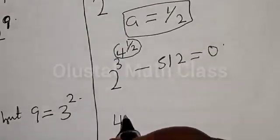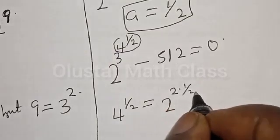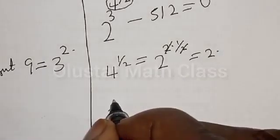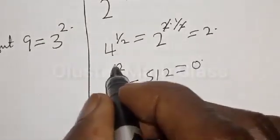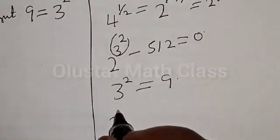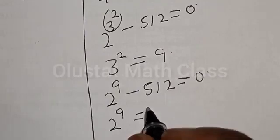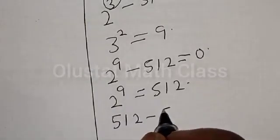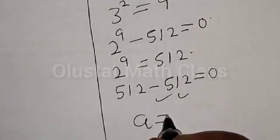Now, 4 raised to power 1/2 is equal to 2 raised to power 2 multiplied by 1/2, which equals 2. Replacing that, we have 2 raised to power 3 raised to power 2, minus 512, must equal 0. Then 3 raised to power 2 is 9. So we have 2 raised to power 9, minus 512, must equal 0. And 2 raised to power 9 is 512, so 512 minus 512 equals 0, which satisfies the equation at a equals 1/2.